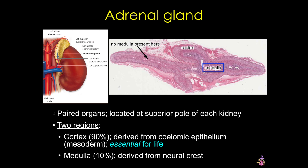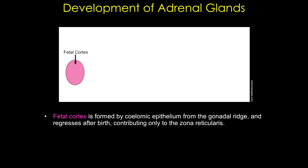Let's briefly review the embryology of the adrenal gland. The fetal cortex is formed by a subset of coelomic epithelial cells that delaminate from the developing gonadal ridge, and they enter the mesoderm. Those cells differentiate into large acidophilic cells, which form the fetal cortical cells. Interestingly, this layer regresses after birth and contributes only to the zona reticularis, which we'll see in a few minutes.